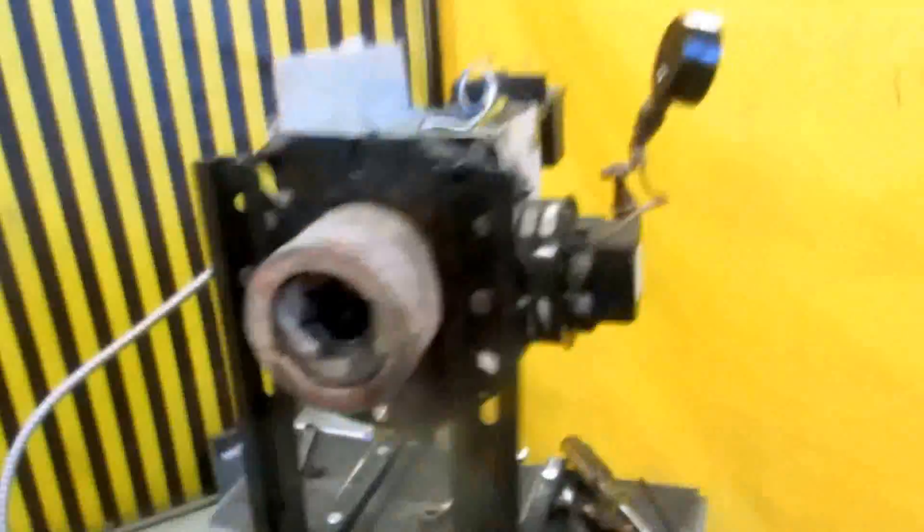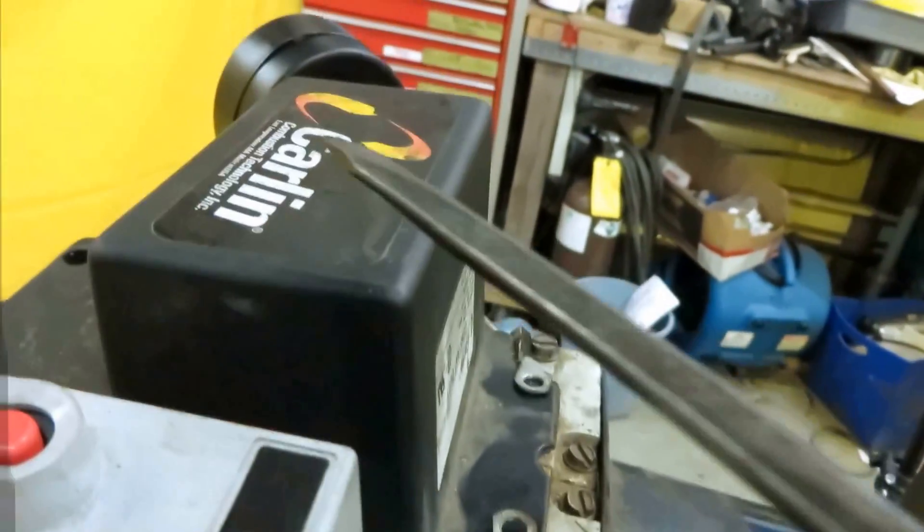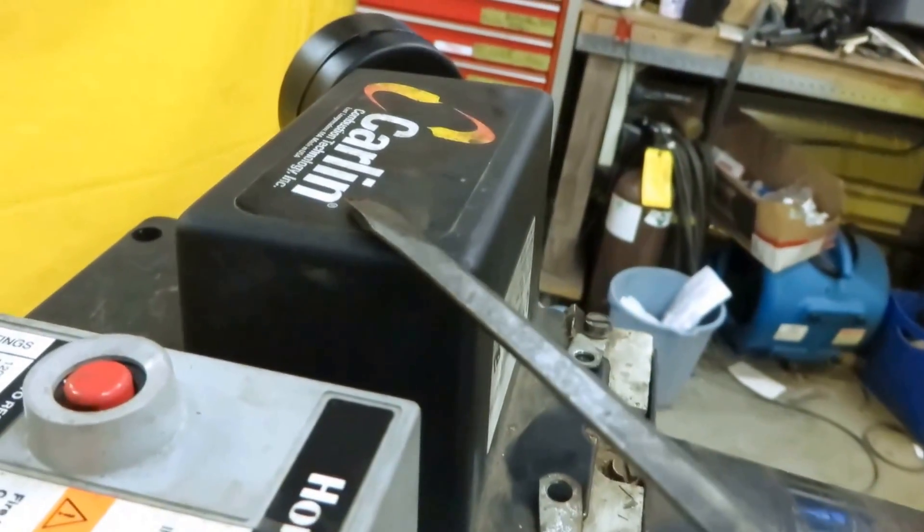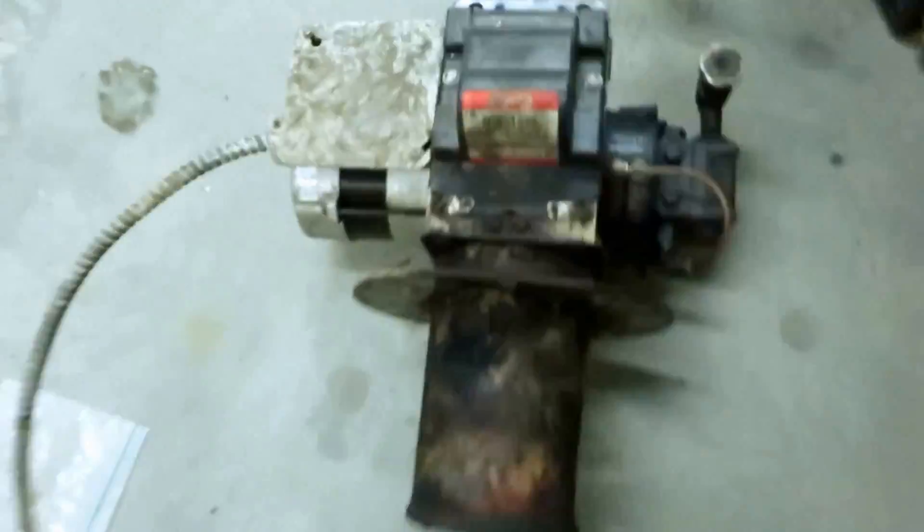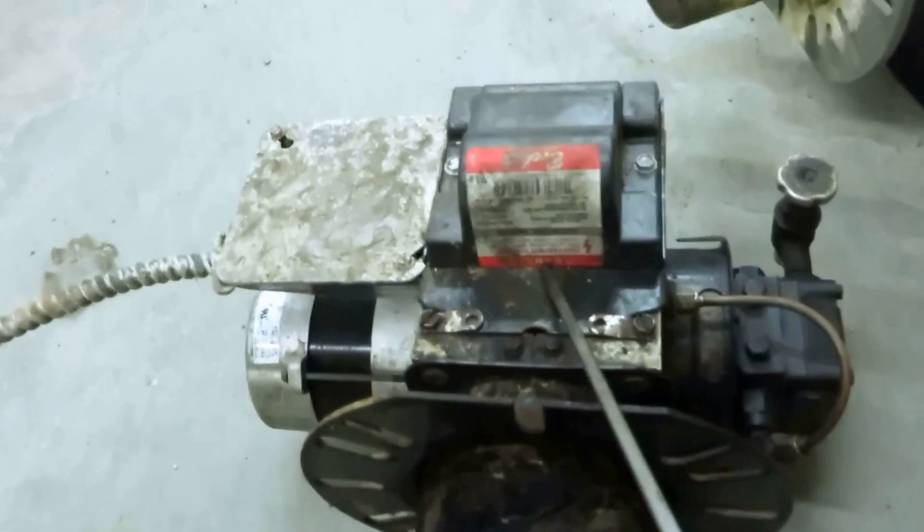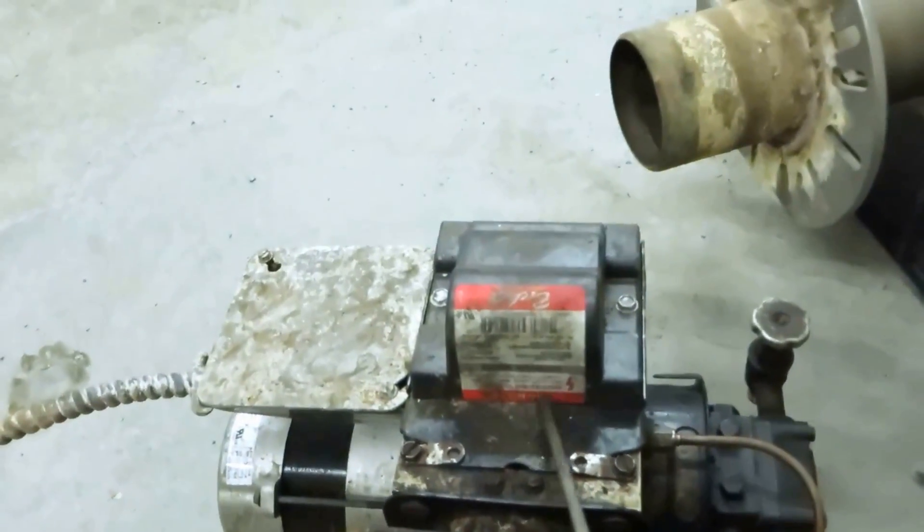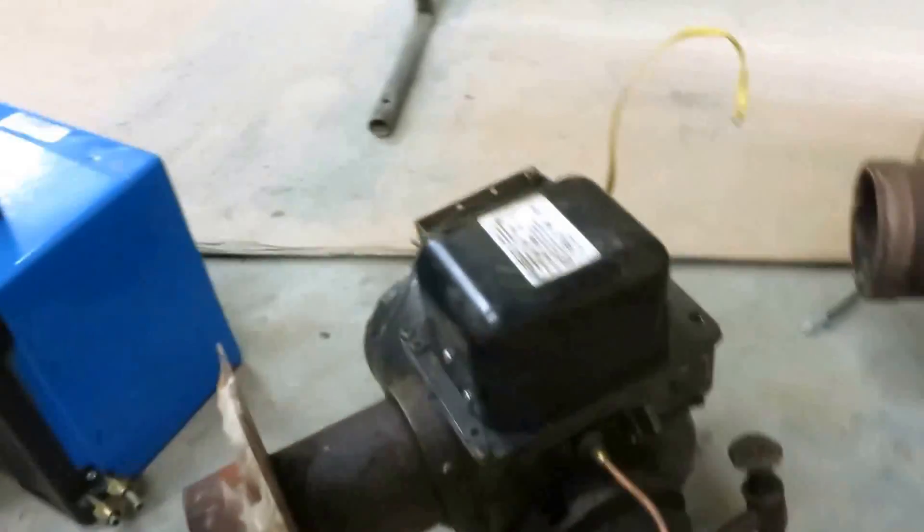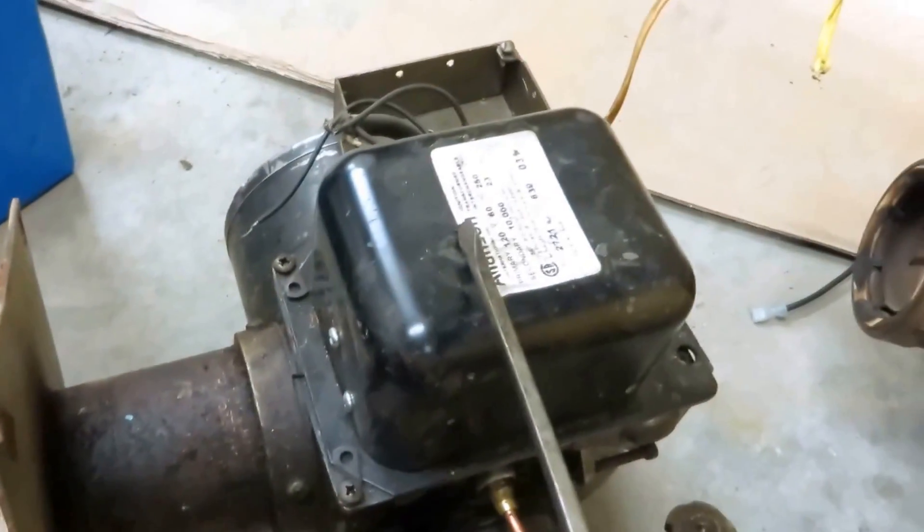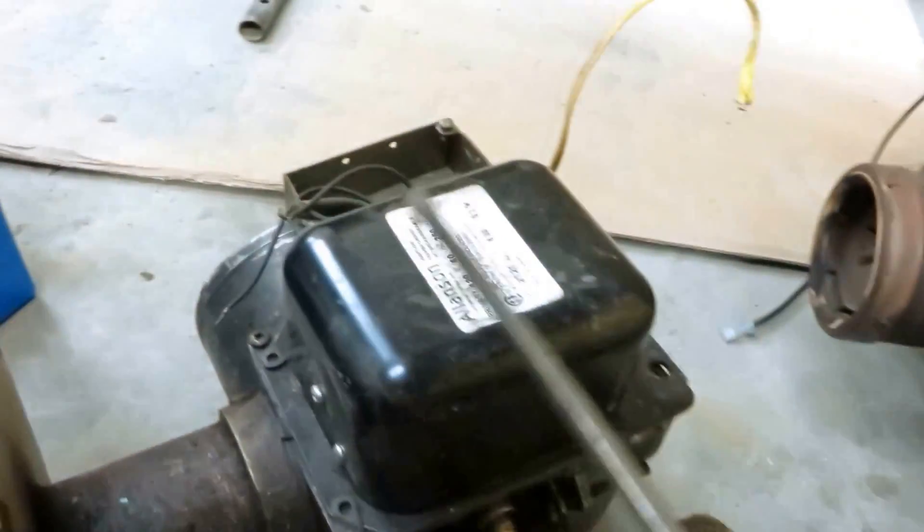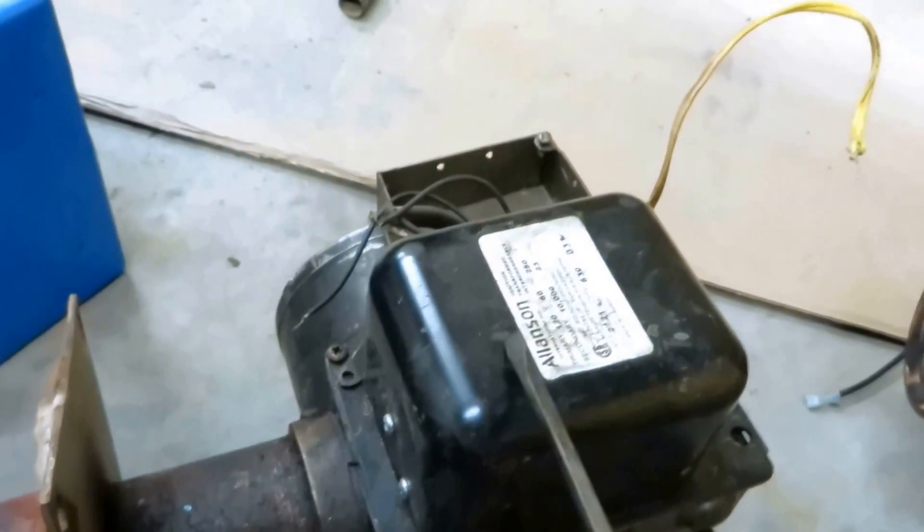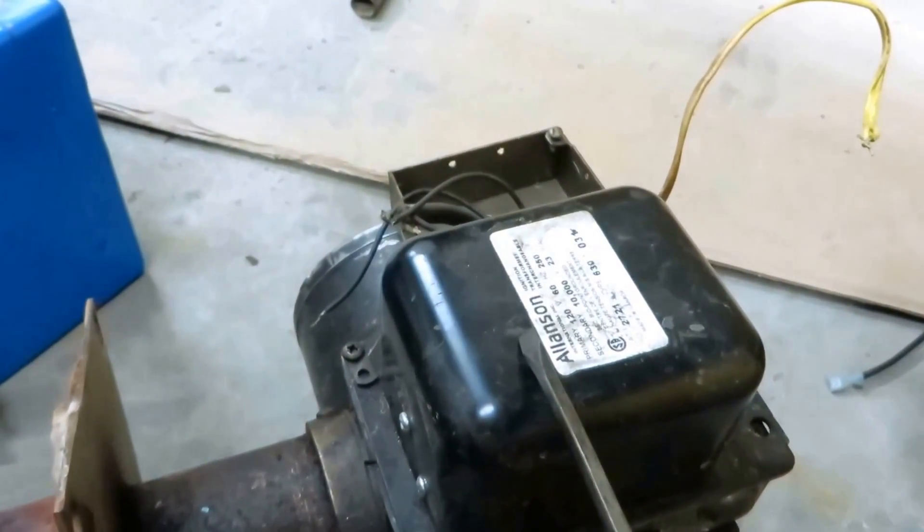Basically we've got three different types of transformers. This particular transformer is an electronic type, a 14,000 volt transformer. This one here is a Beckett electronic type 14,000 volt transformer. This is a standard 10,000 volt transformer. These are the kind I like to use—they usually last, they're steady, and they're an old workhorse.